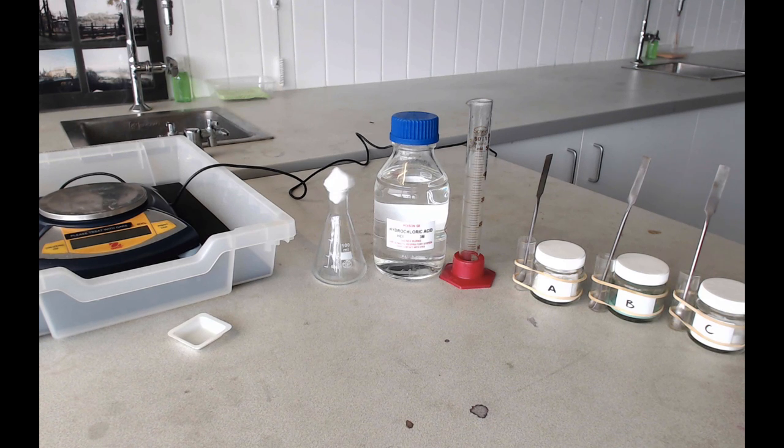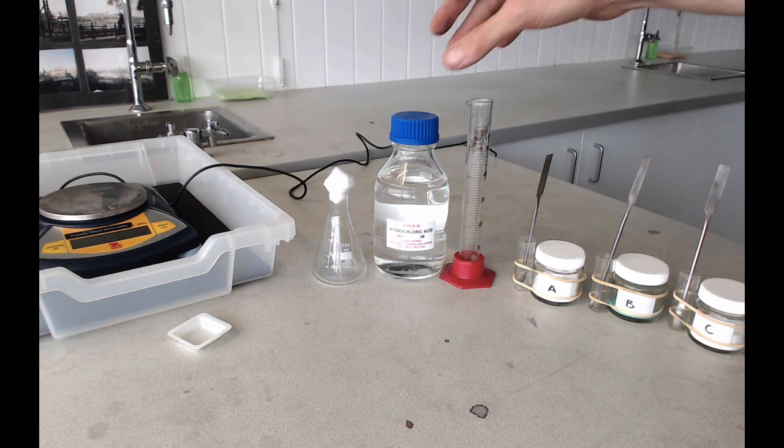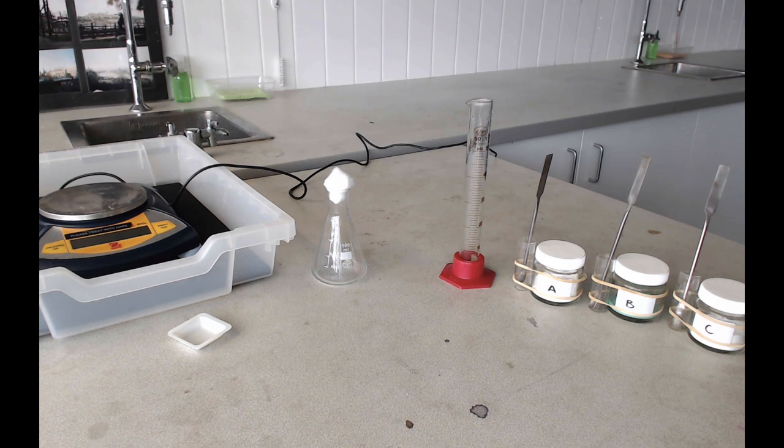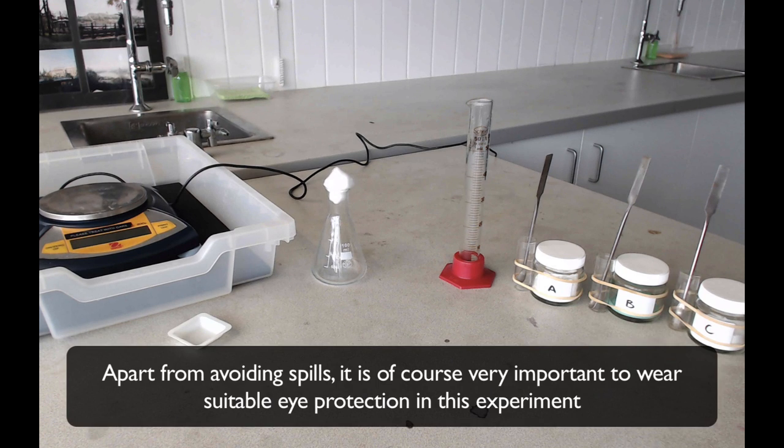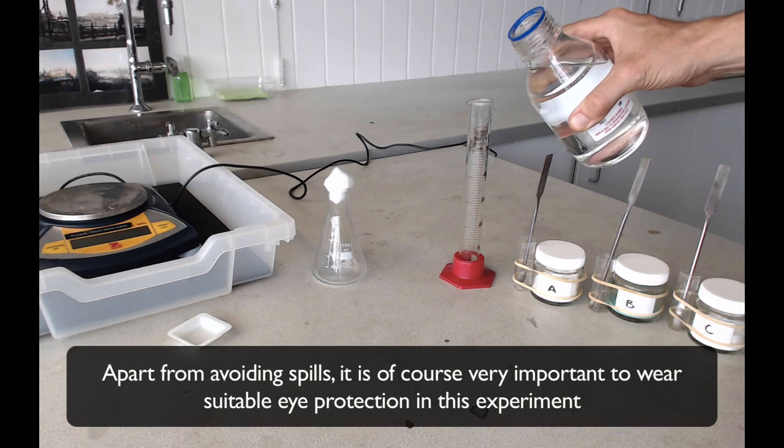The first thing that you're going to need to do is to measure out 20 ml of the 3 molar per liter hydrochloric acid using your measuring cylinder. Now beware with this acid, it is quite concentrated so we're going to try not to spill it, and if we do we're going to make sure that we clean those spills up as quick as we can. Be really careful when you're pouring your acid into your measuring cylinder.